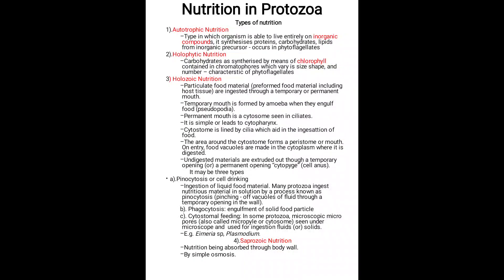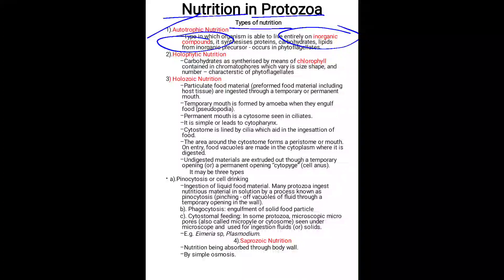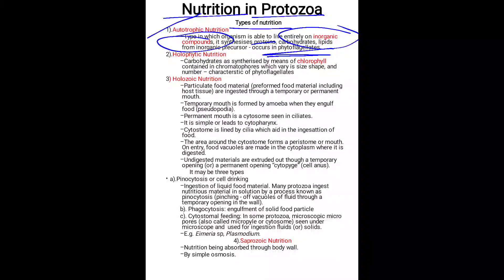In this video we will discuss the nutrition of protozoa. The types of nutrition are: autotrophic nutrition, holophytic nutrition, holozoic nutrition, and saprozoic nutrition. In autotrophic nutrition, the organism is able to live entirely on inorganic compounds, synthesizing proteins, carbohydrates, and lipids from inorganic precursors, as occurring in phytoflagellates.